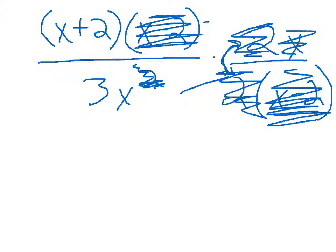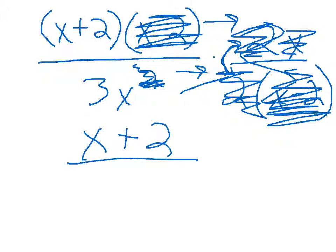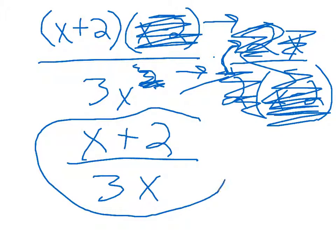Then you would just multiply across. Since there's nothing here, our final answer is x plus 2 over 3x. And nothing else can be crossed out.